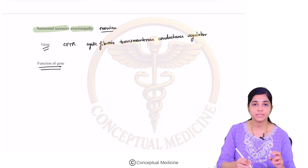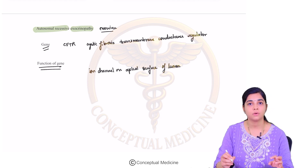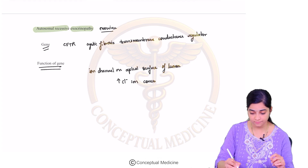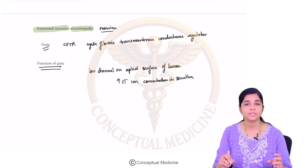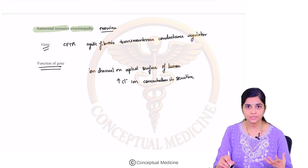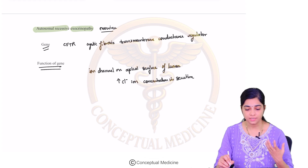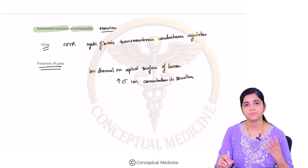The function of this gene is that it helps in maintaining the ion channel on the apical membrane, on the apical surface of the lumen. And it increases the chloride ion concentration in the secretions. So on the whole, the basic function of the CFTR gene is to bring about exocrine secretions from the exocrine gland into the lumen — it upregulates this ion channel and increases ion concentrations so that the secretions become more lucid.